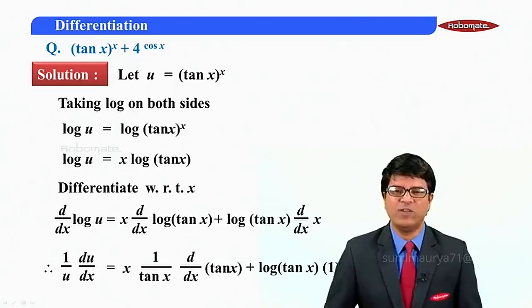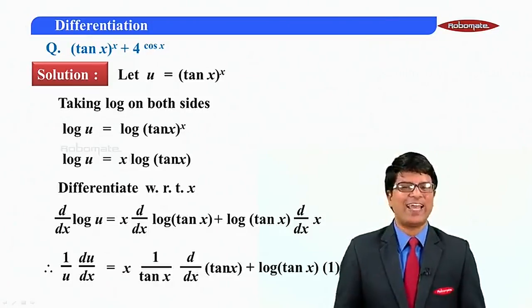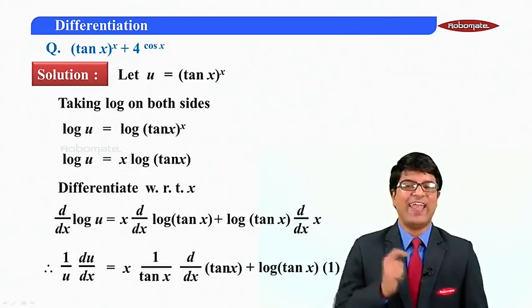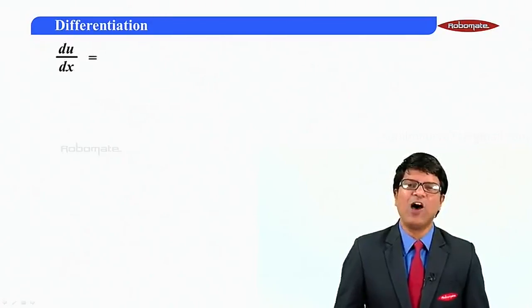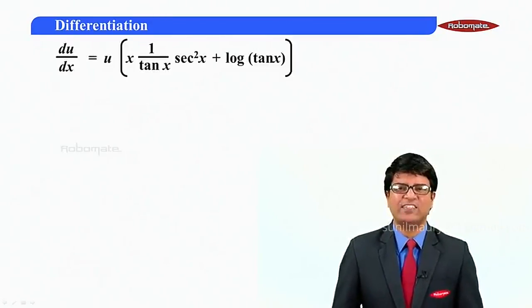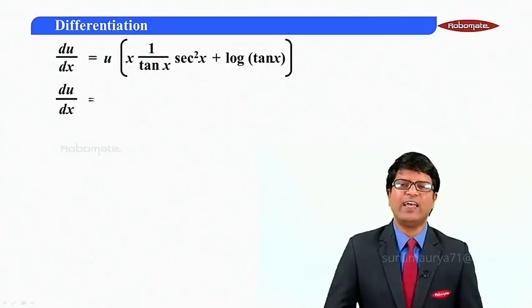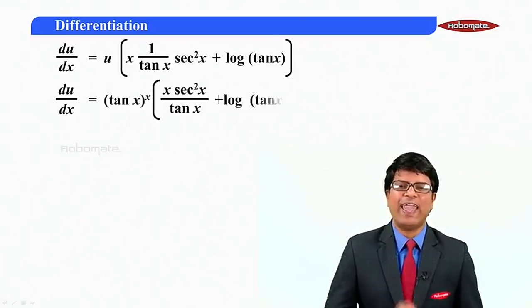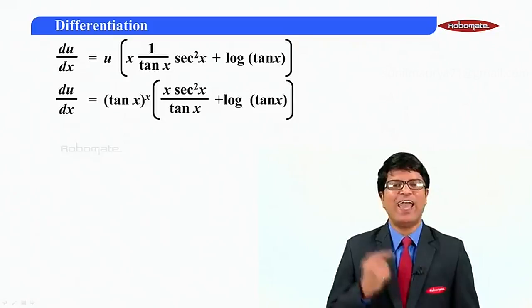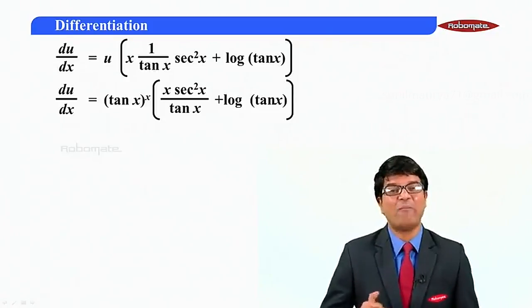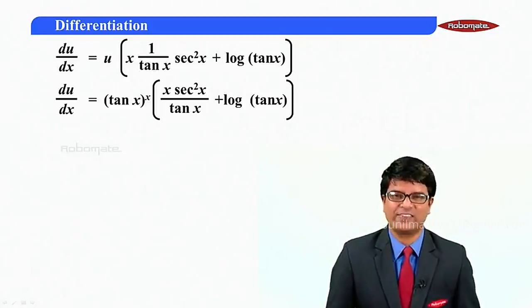So du by dx will be u bracket x by tan x times sec squared x plus log of tan x. Substituting the value of u, du by dx equals tan x raised to x times the quantity x sec squared x upon tan x plus log of tan x.